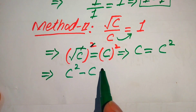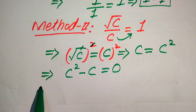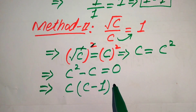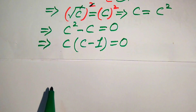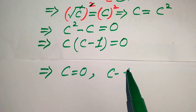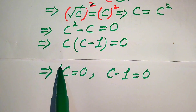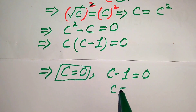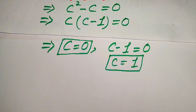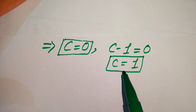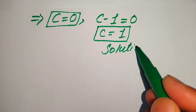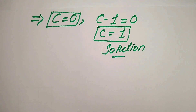We move C to the right hand side to get C squared minus C equals 0. Both terms involve C, so we factor out C, giving C times (C minus 1) equals 0. This splits into two cases: C equals 0, and C minus 1 equals 0, which gives C equals 1. So we have two roots: C equals 0 and C equals 1. We already confirmed C equals 1 is a valid solution from Method 1.